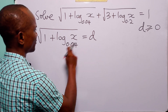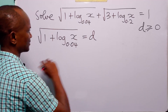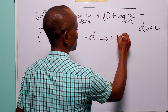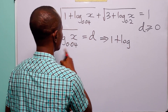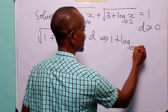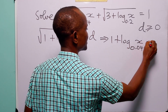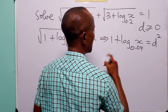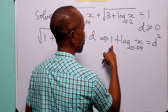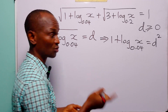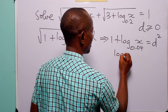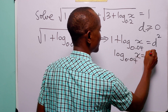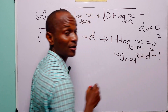When we square both sides of this equation, we have that 1 plus log base 0.04 of x is equal to d squared. When we subtract 1 from both sides, we have that log base 0.04 of x is equal to d squared minus 1.